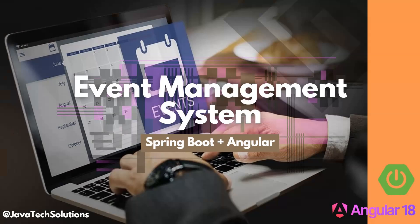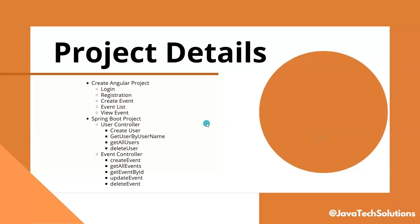First of all, we need to set up the project. There are two types of projects: one for the frontend and another for the backend. We need to create the Spring Boot application first, and then we are going to create the Angular project. To create the Spring Boot project, we go to the Spring Initializer, select Maven, Java, the latest stable Spring Boot version, and add our dependencies. Since we are creating REST APIs, we need Spring Web, Spring Data JPA, and a MySQL driver for the database.